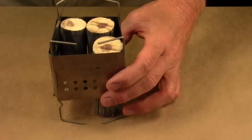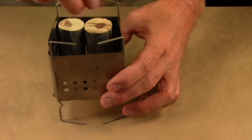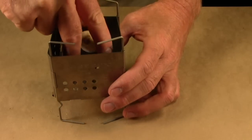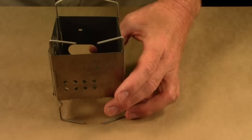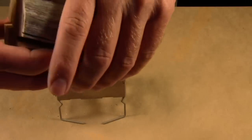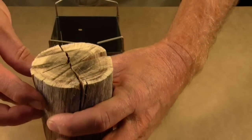So that's one way you can do the Swedish Fire Torch is with the four separate approximately one inch in diameter sticks. Now the other way you can do it is by cutting a larger diameter stick and then splitting it into four pieces.